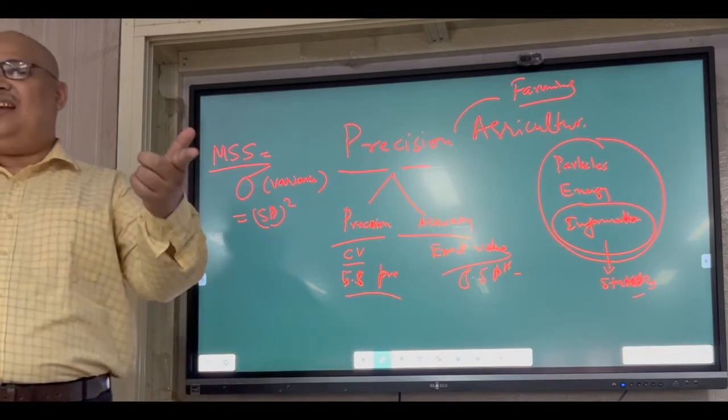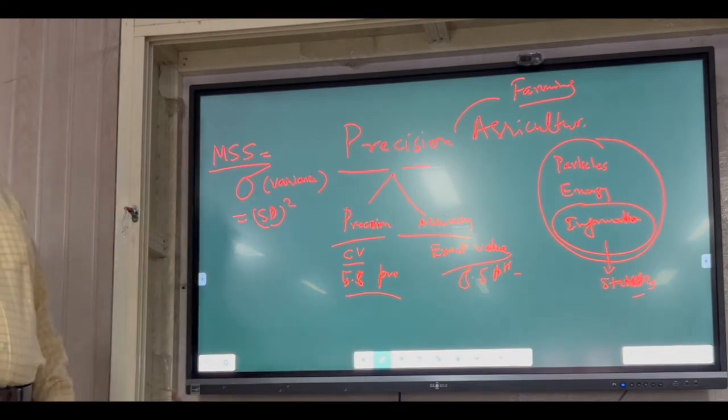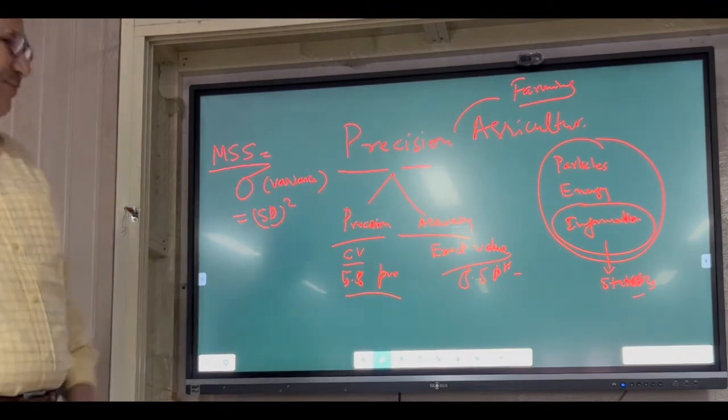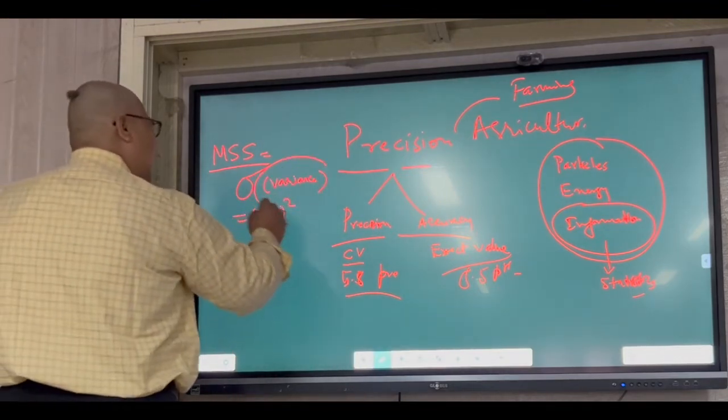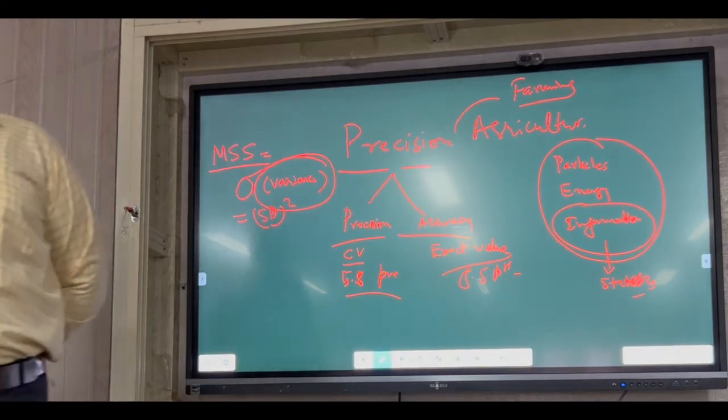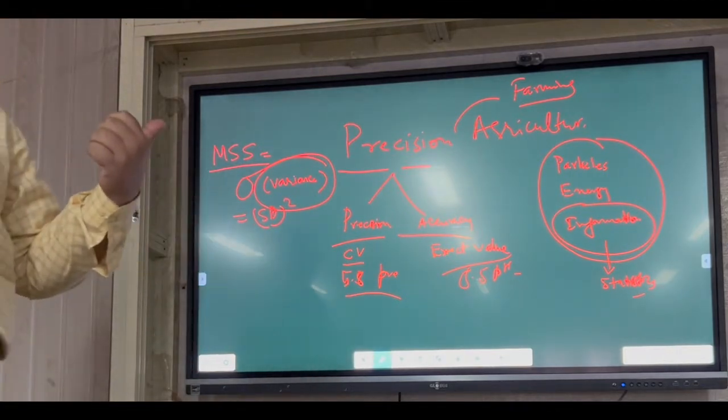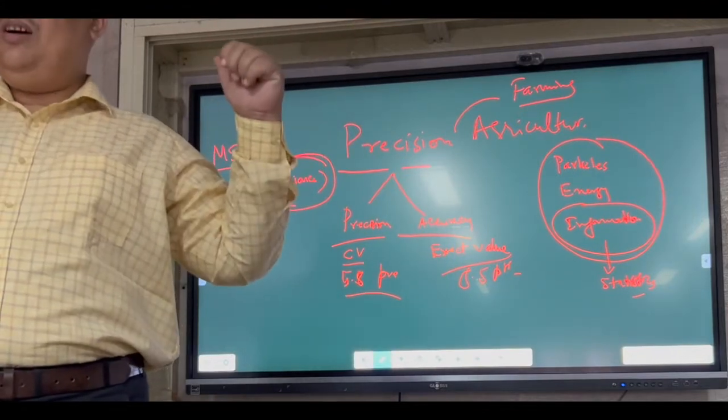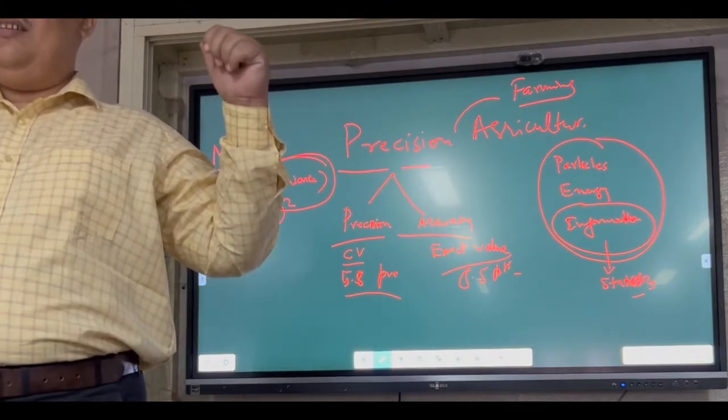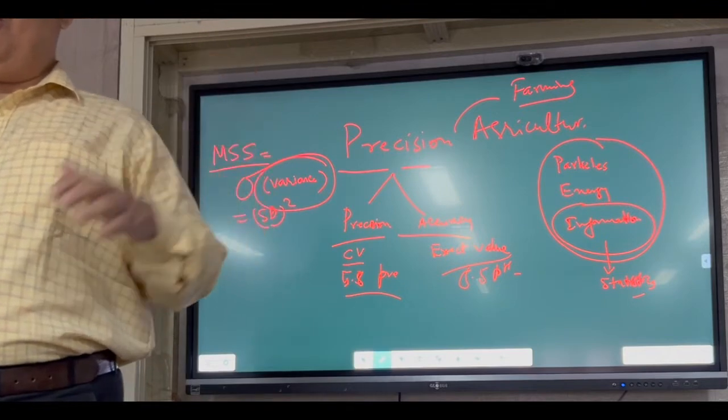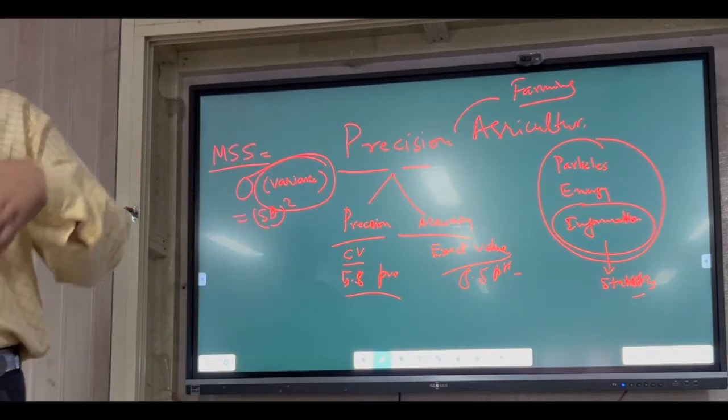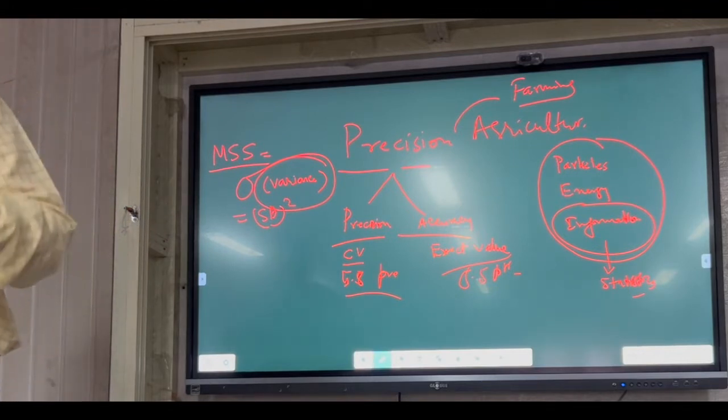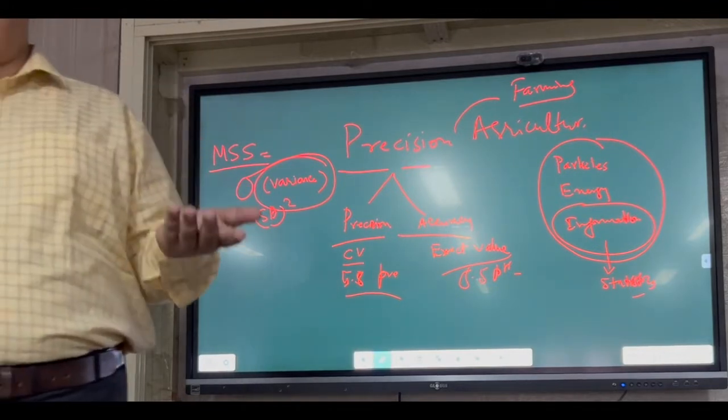What is your target? Your target, experimentation target is error-free result. When your degree of freedom increases, error decreases. So analysis of variance, it is an activity to reduce the variation, is known as precision.